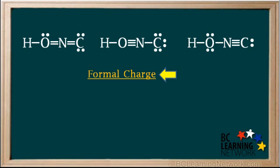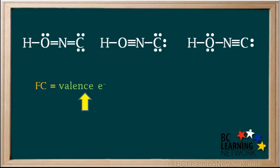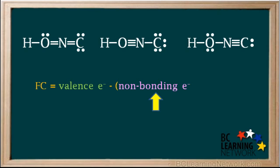We can answer this by finding what's called the formal charge on each atom. Formal charge, which we'll call FC, is equal to the number of valence electrons minus the sum of the non-bonding electrons around it plus the number of bonds the atom has attached to it.